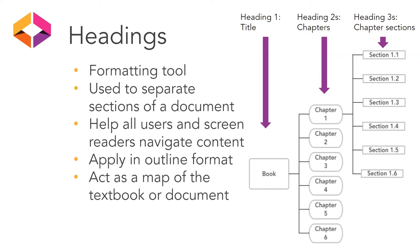To apply headings in Word, you simply highlight the information and then choose the heading style from the top ribbon. In Google Docs, there are also headings — no matter where you're creating it, there will be an option to apply the heading. You just select the text you want, and in both Word and Google Docs it's up on the menu at the top. If anyone has other options for other software they use, please feel free to add it in the chat.